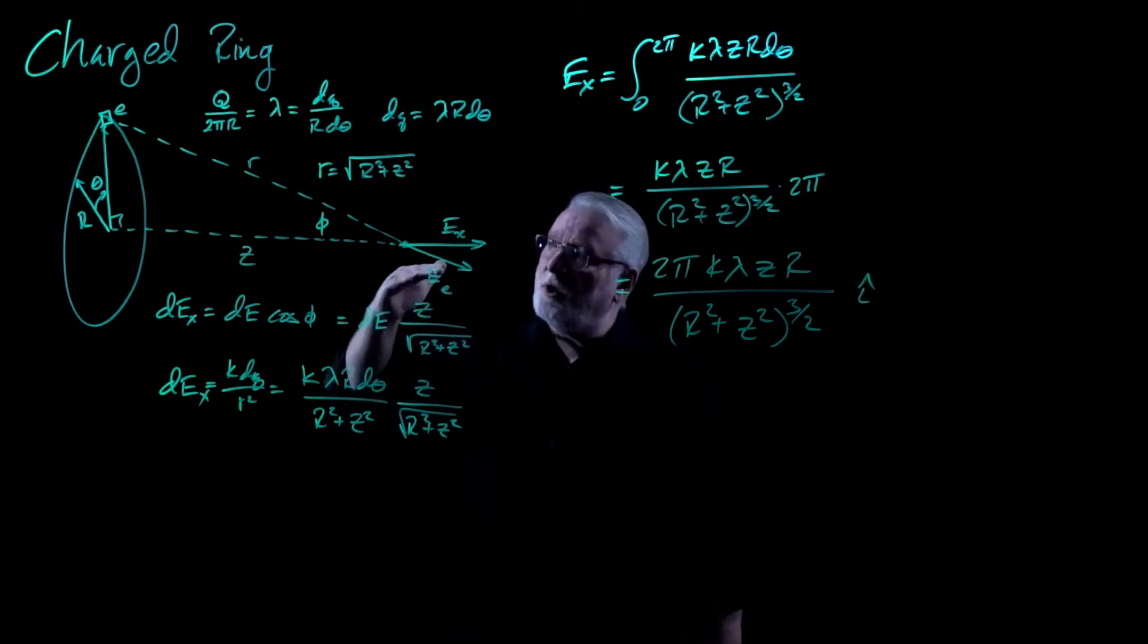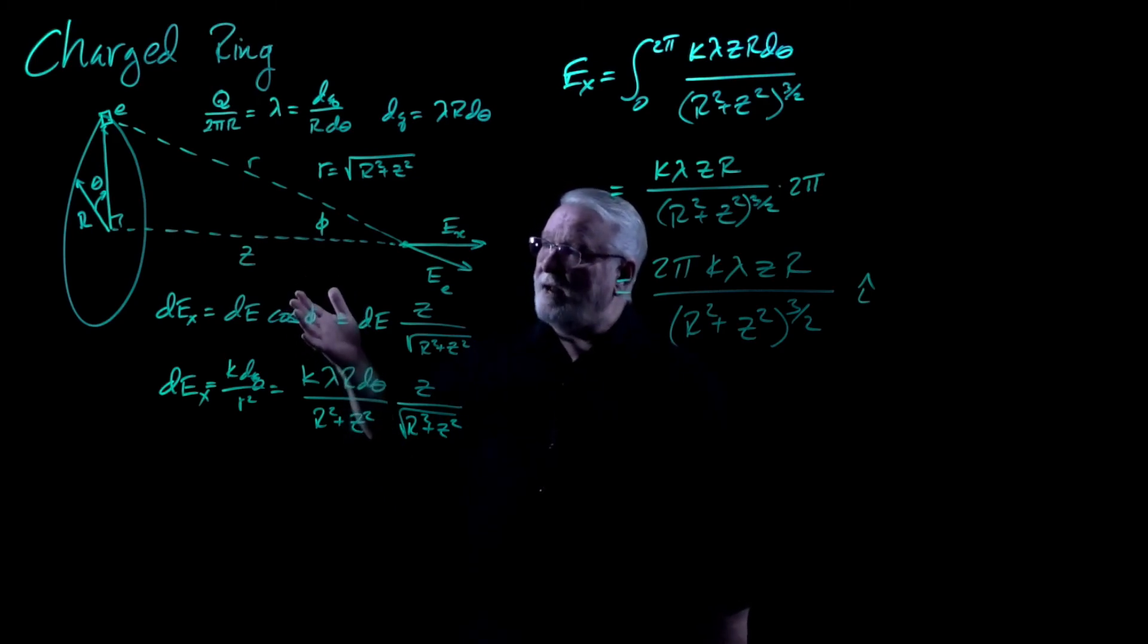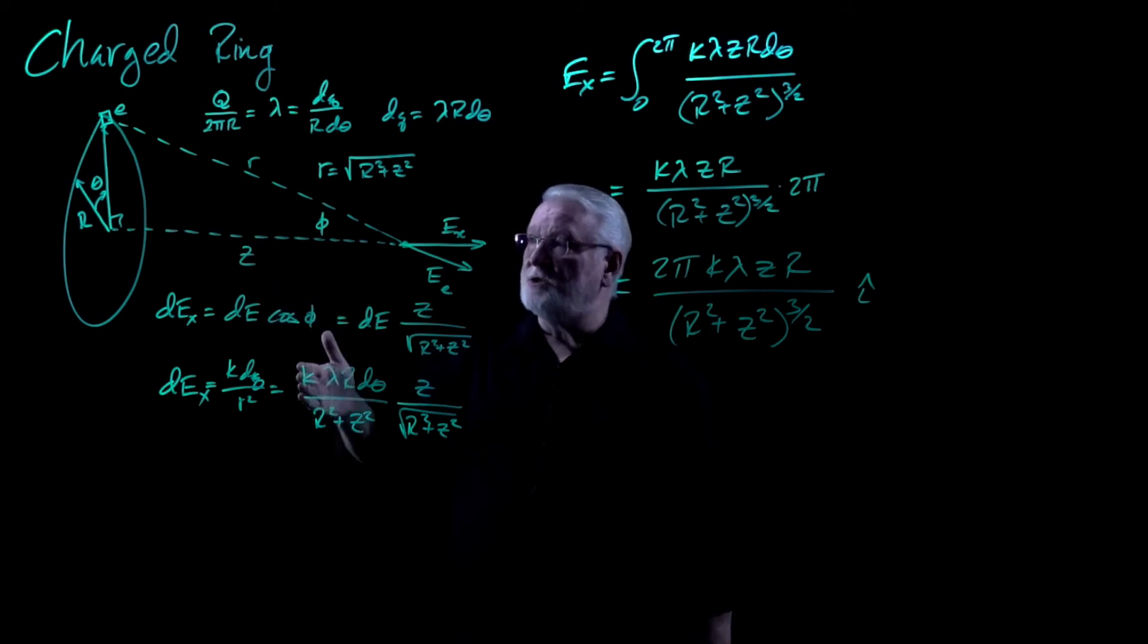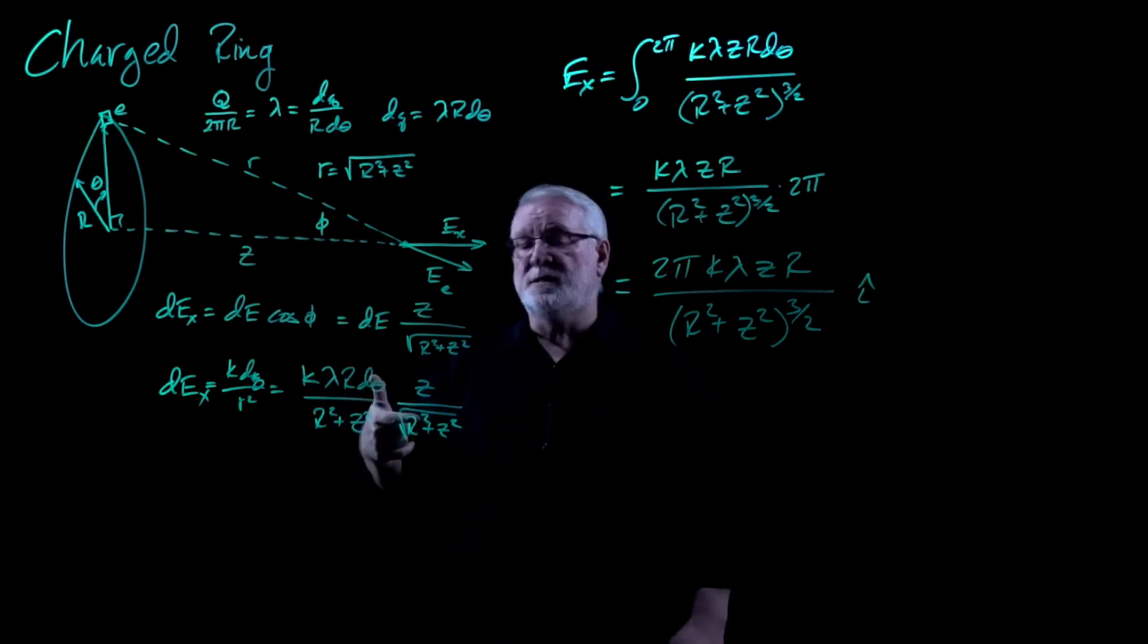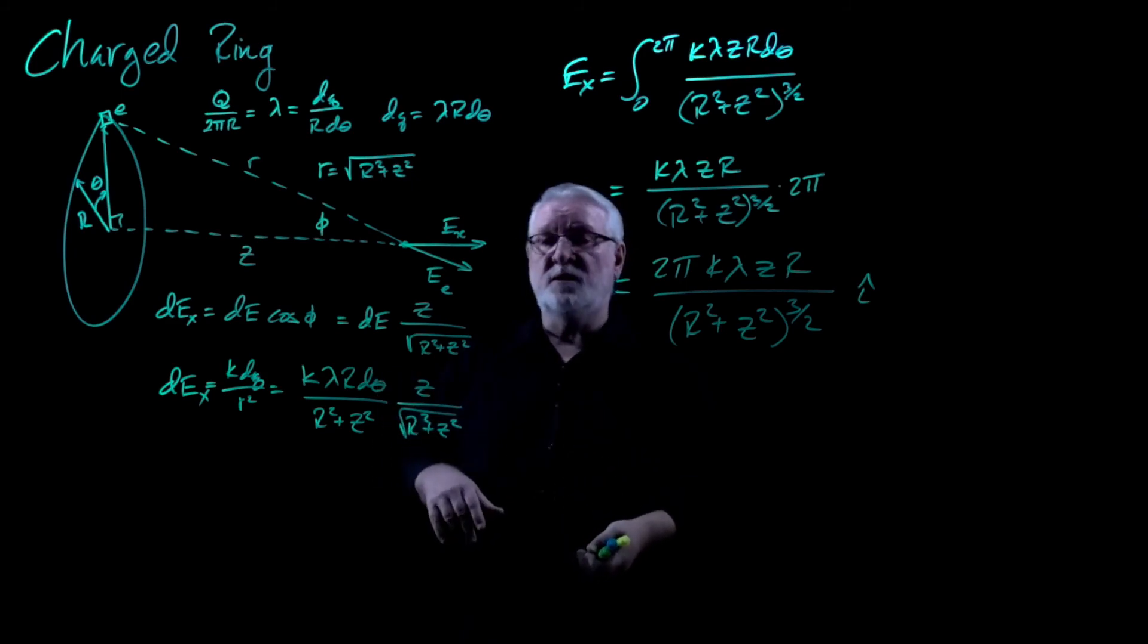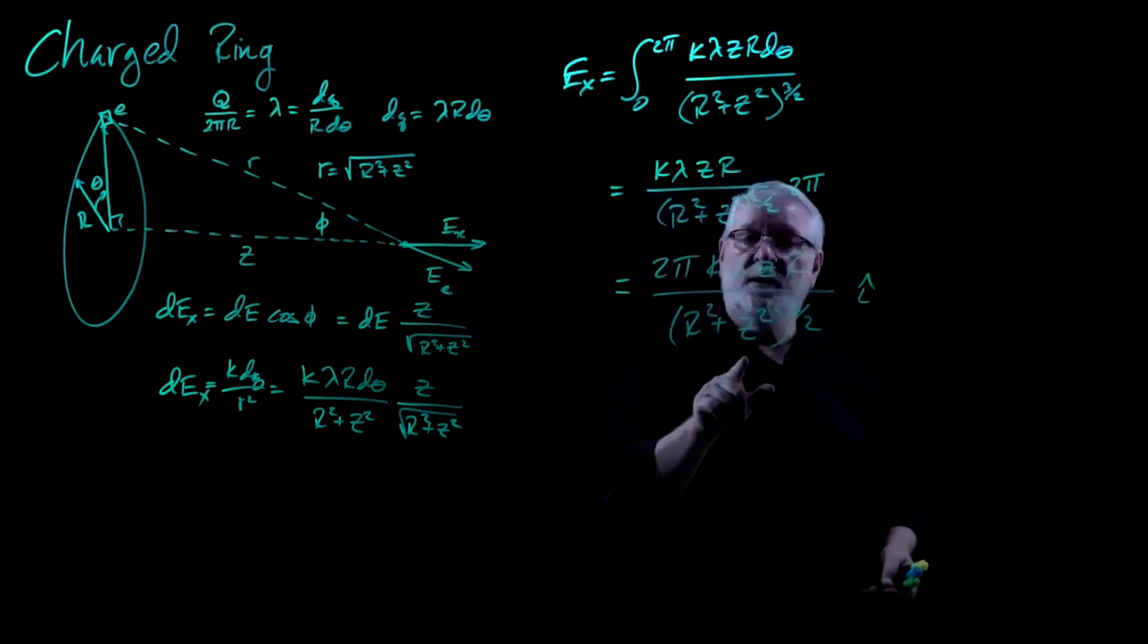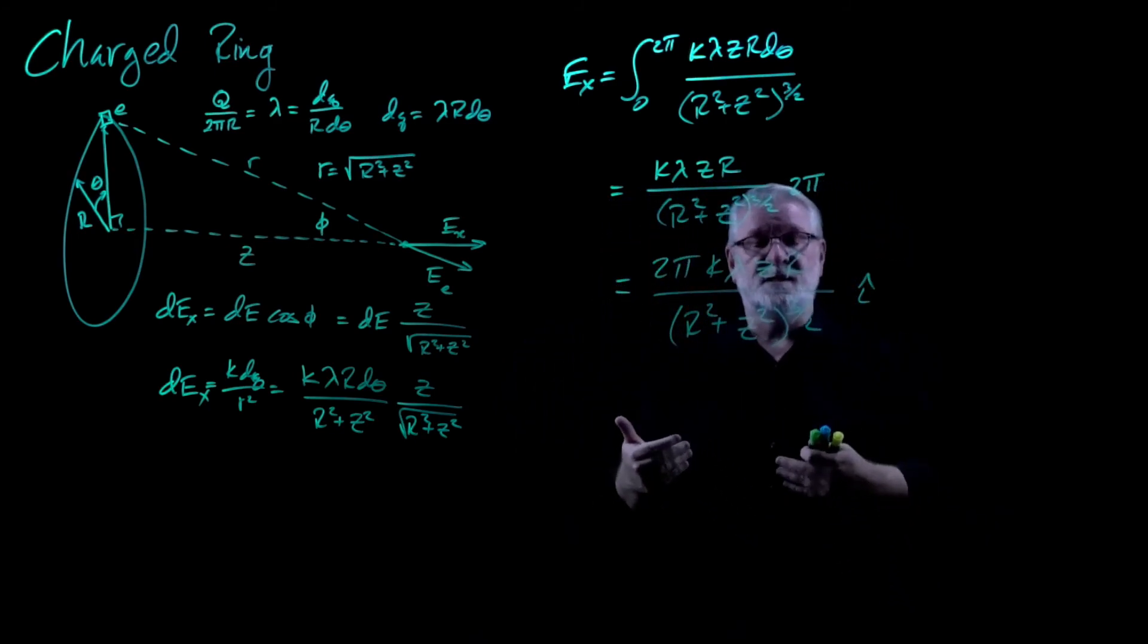Well, basically with this one, we know what we're going to get. At the very center of the ring, we're going to get electric fields that point equal and opposite from all sides of the ring, and they're going to cancel at the very center. And of course, when Z becomes zero, look at what happens to this quantity. There's Z in the numerator. When it's zero, this whole thing is going to cancel out.